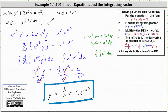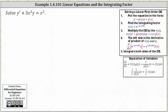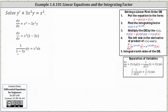We can also solve this using separation of variables. If we subtract 3x squared y on both sides, we have a common factor of x squared. Factoring x squared from the left we have x squared times the quantity 1 minus 3y. The differential equation is now in the form dy dx equals a function of x times a function of y, which is why we can use separation of variables. Separating variables: 1 divided by the quantity 1 minus 3y times dy equals x squared dx.